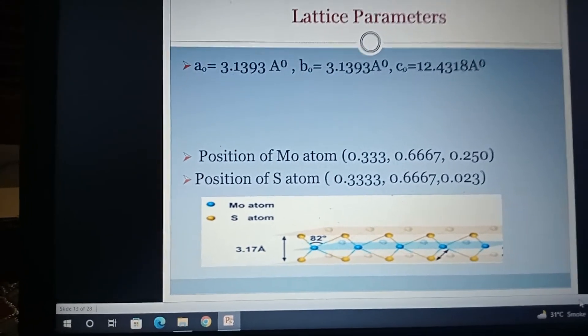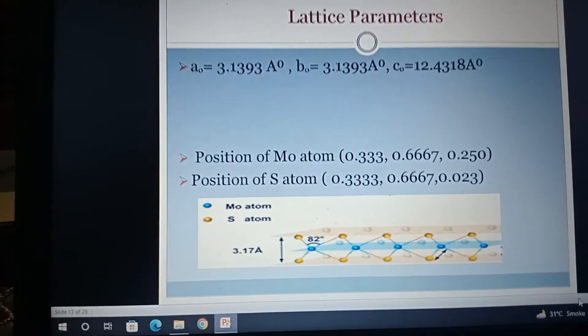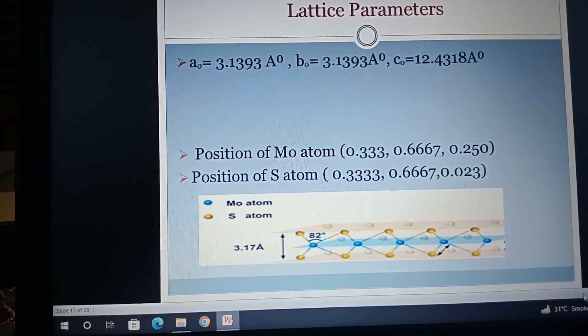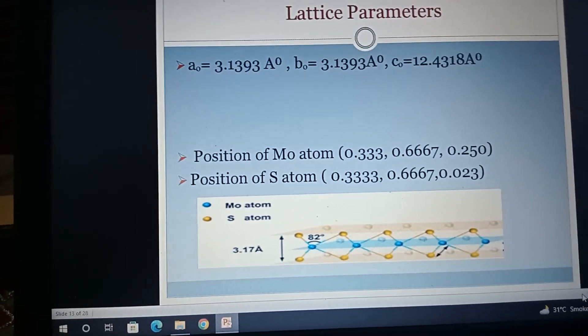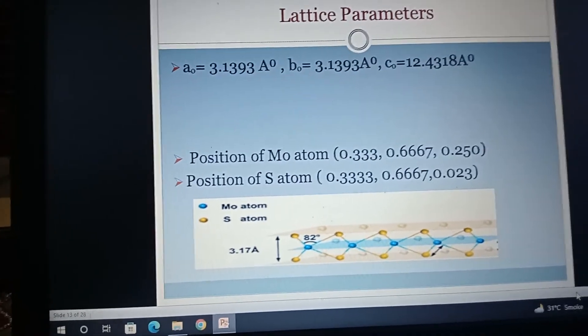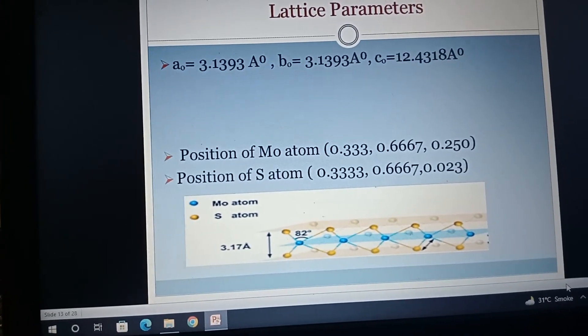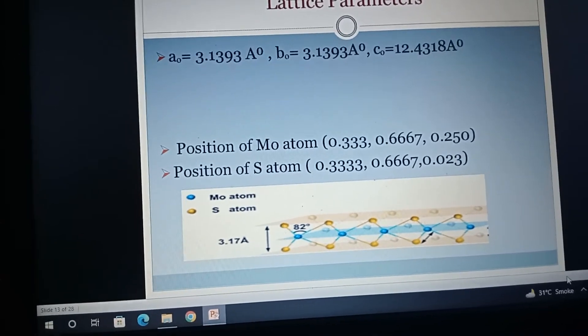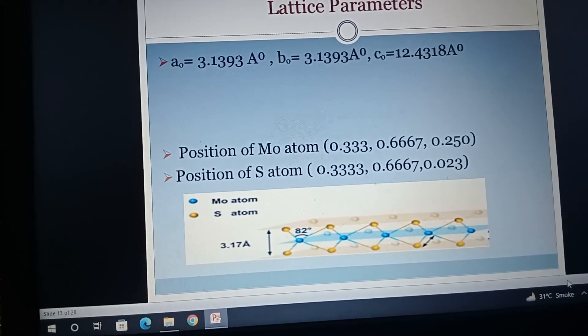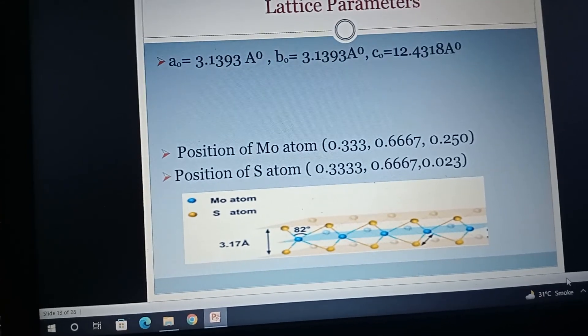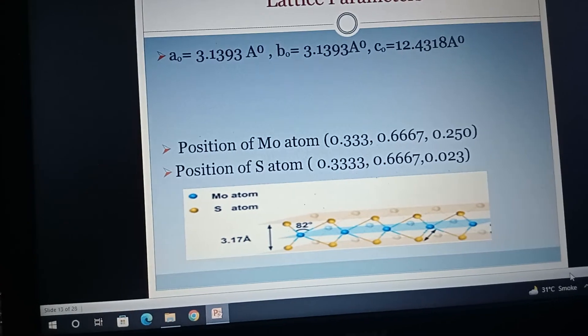Lattice parameters are very important when you run 2K. The lattice parameters are a equals 3.1393, b equals 3.1393, c is 12.4318. Why are alpha and beta same and c different? Because gamma is in a different position. 0.33 and 0.667 are same because alpha and beta are same, and 0.25 is different because c node is different and gamma is different.